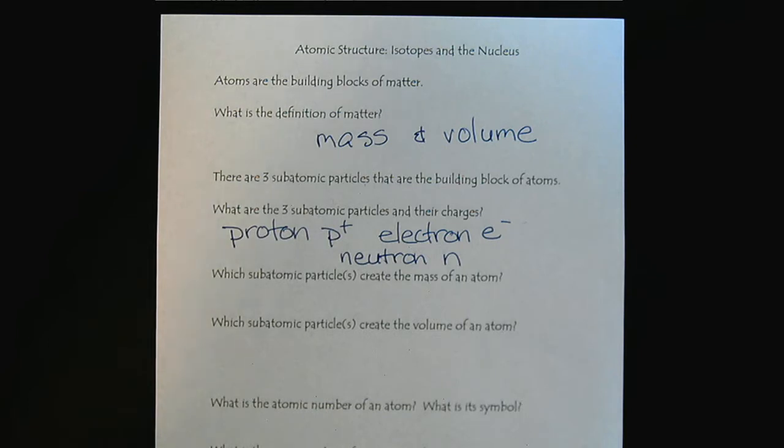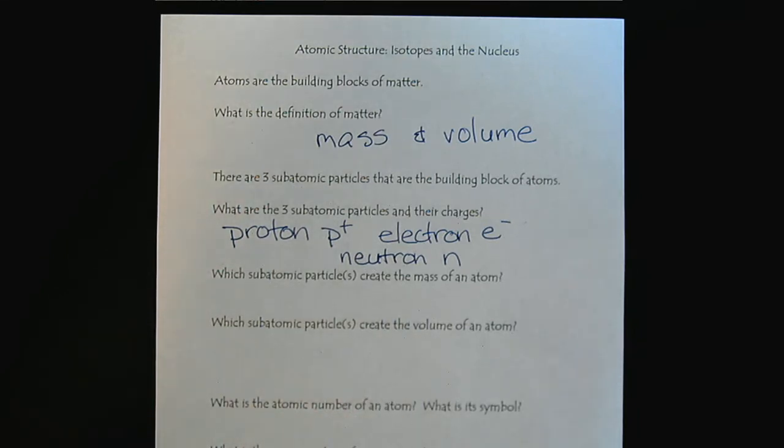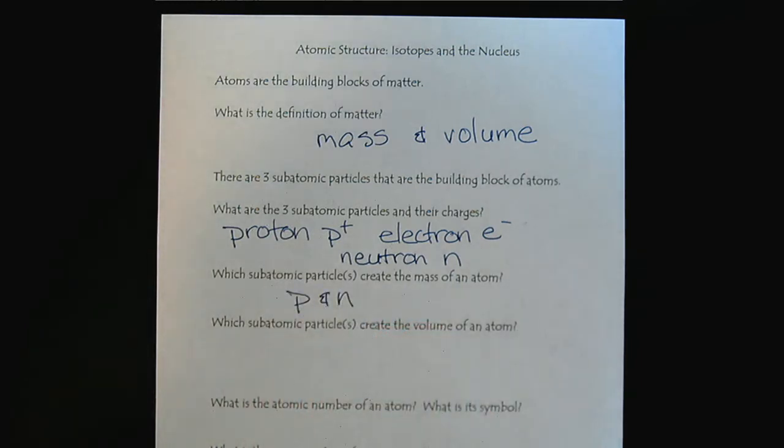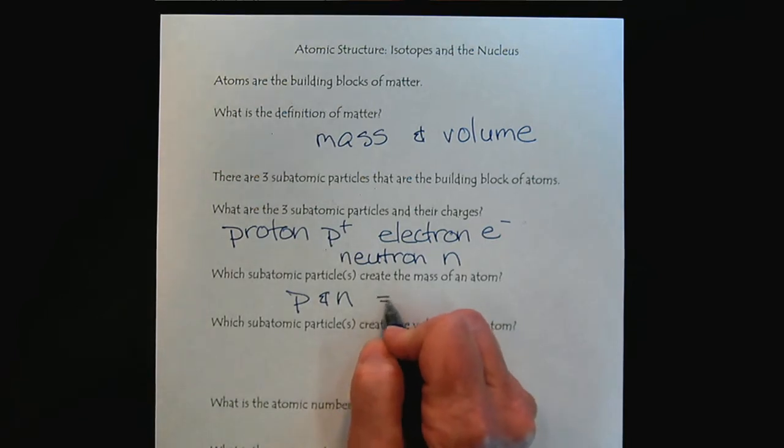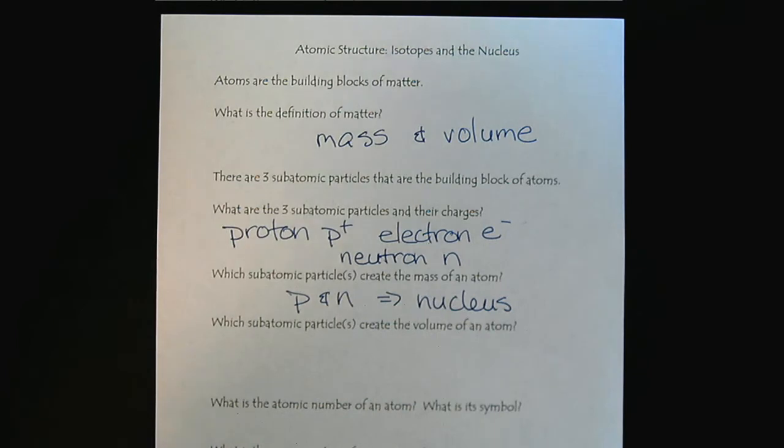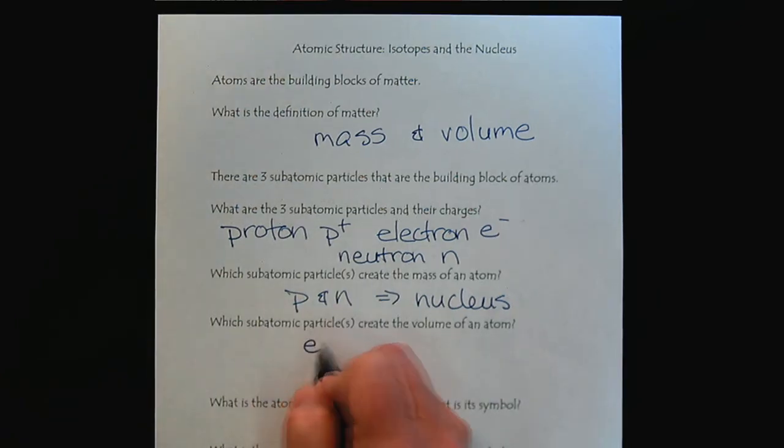So now if we take these three subatomic particles, let's link them to matter. What creates the mass of matter? That's going to be the subatomic particles that create the mass of the atom. So that will be the protons and the neutrons, which create the nucleus. Which subatomic particles create the volume of an atom? There's only one left, and that would be the electron.